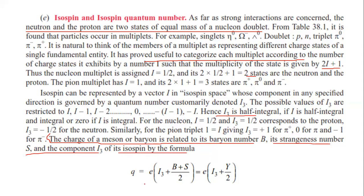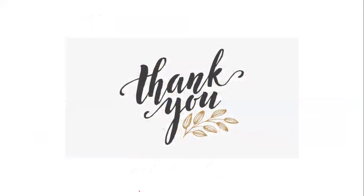The charge of a meson or baryon is related to its Baryon number B, strangeness number S, and the component I3 of its isospin by the formula: Q equals e times (I3 plus (B plus S) divided by 2), where (B plus S) equals hypercharge Y. This formula relates to the total charge of an elementary particle, and we will be able to verify the law of conservation in elementary particle reactions.